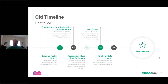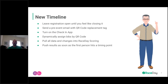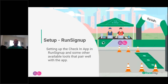Once all the data is finally entered, the timer hits their mythical moment of zen — everything is flowing, all data is where it should be — and they're timing the race and producing results. The new timeline is very different: leave registration open until you feel like closing it, then send a pre-event email with a QR code replacement tag so you can scan QR codes with the check-in app for more efficient lookup.